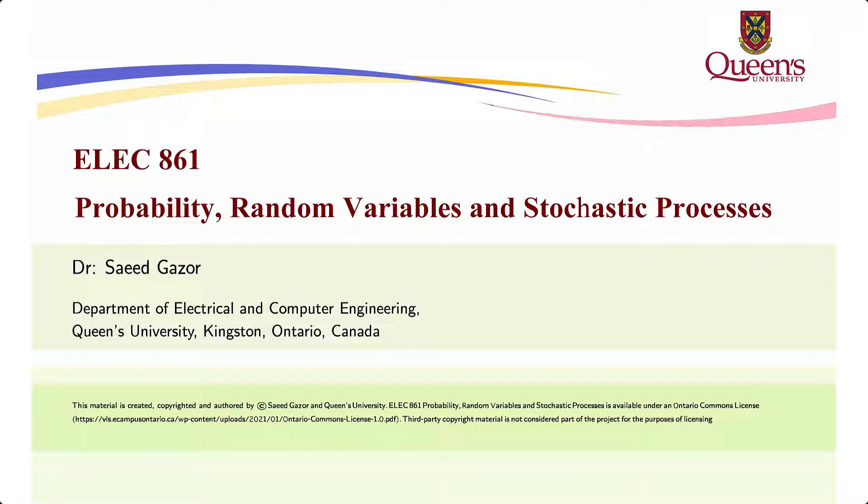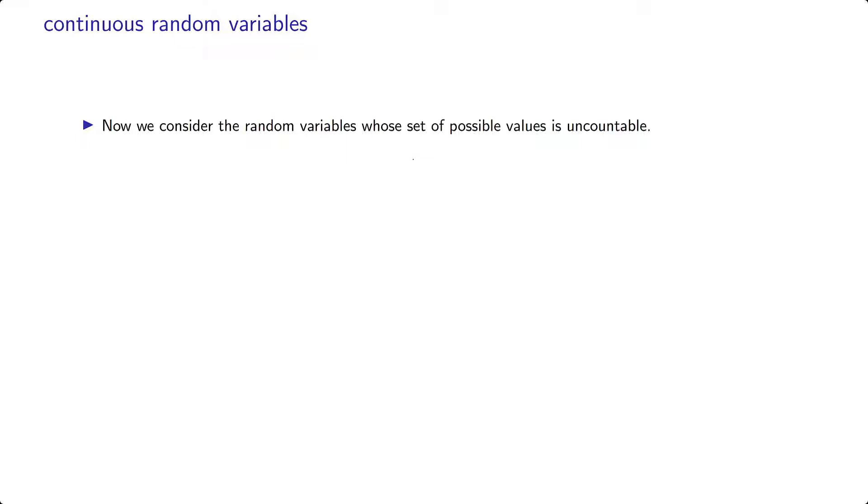Now we consider a random variable whose set of possible values that can take on is not countable. In that case, we define the probability of X being in a set B in an interval, or in a union of intervals, and so on. B is a Borel set.